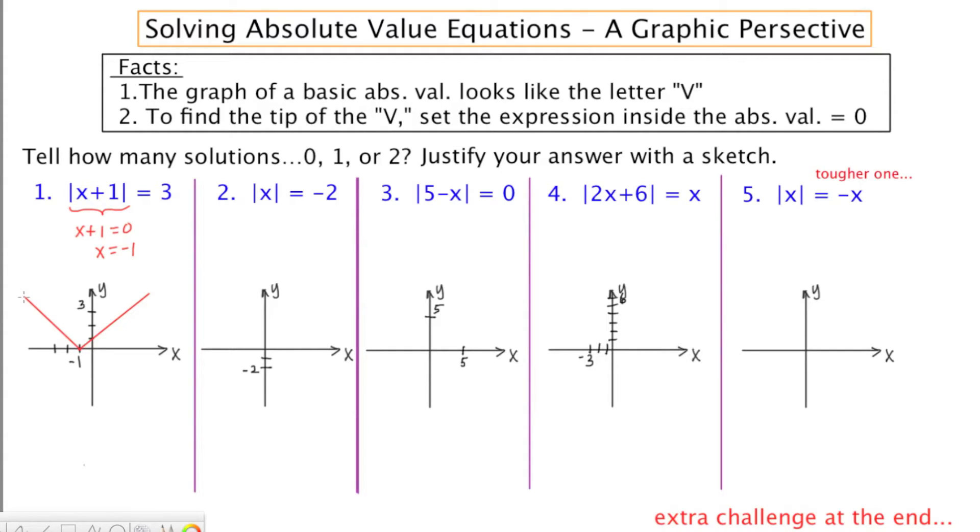Then we'll graph the right-hand side, which is the constant 3, or Y equals 3. The question you want to ask yourself is, do these two graphs cross? Do the red and green graphs cross? The answer is yes, they do, and it happens two times.